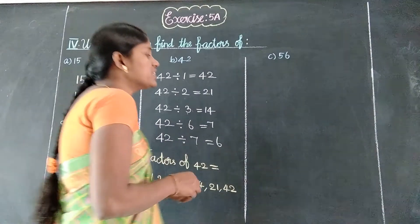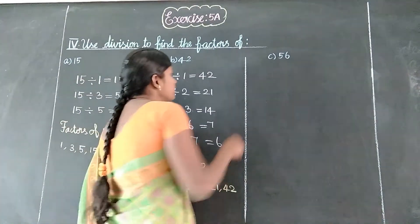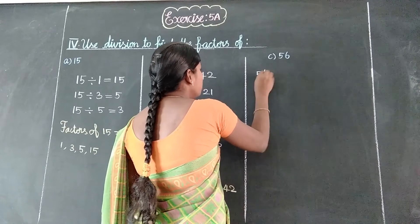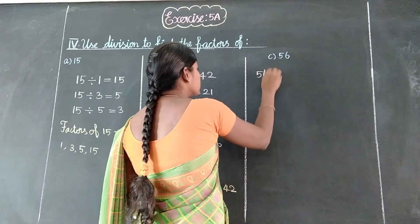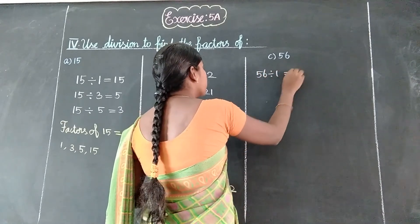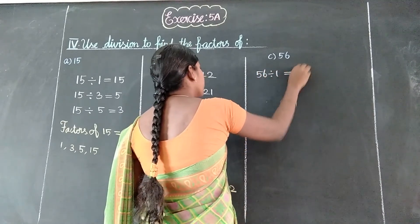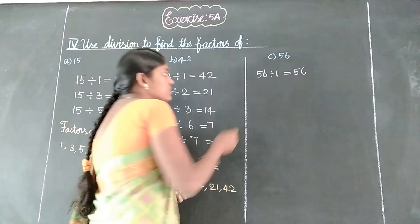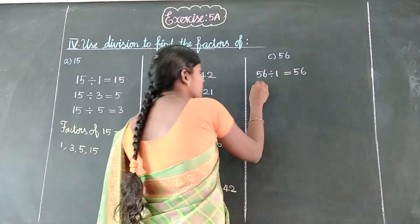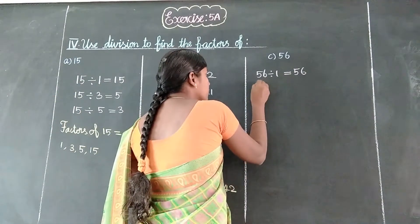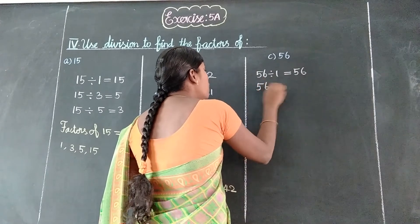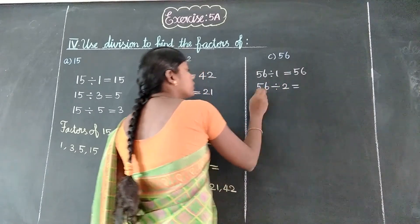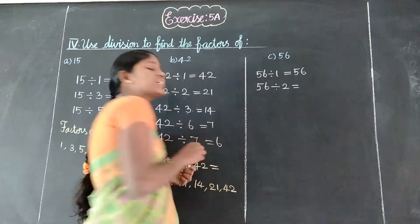And next, 56. 56 — 1 table: 1 divides 56. Next, 2 table: 56 divided by 2.